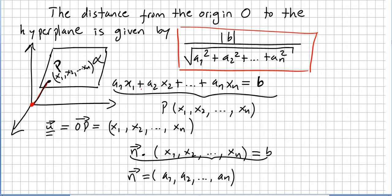So if you have a hyperplane a1 x1 plus a2 x2 etc plus an xn equals B, imagine this is your hyperplane. The distance from that hyperplane to the origin is given by this formula.